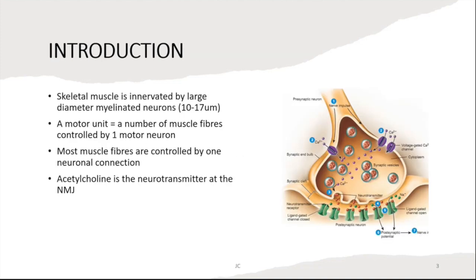Skeletal muscle is innervated by large diameter myelinated neurons. A motor unit is defined as the number of muscle fibers controlled by one motor neuron. Most muscle fibers are controlled by one neuronal connection, except where finer movement is required, such as with the intrinsic laryngeal muscles and facial muscles. Acetylcholine is the main neurotransmitter at the neuromuscular junction for striated muscle.